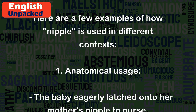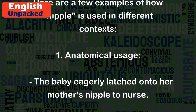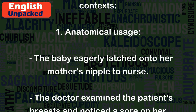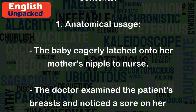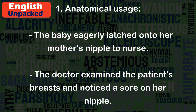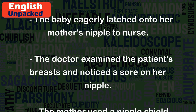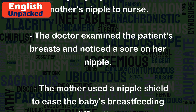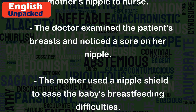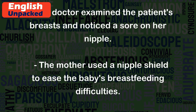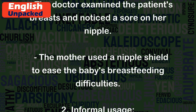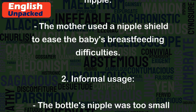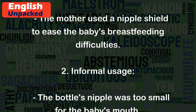Here are a few examples of how nipple is used in different contexts. 1. Anatomical Usage: The baby eagerly latched onto her mother's nipple to nurse. The doctor examined the patient's breasts and noticed a sore on her nipple. The mother used a nipple shield to ease the baby's breastfeeding difficulties.